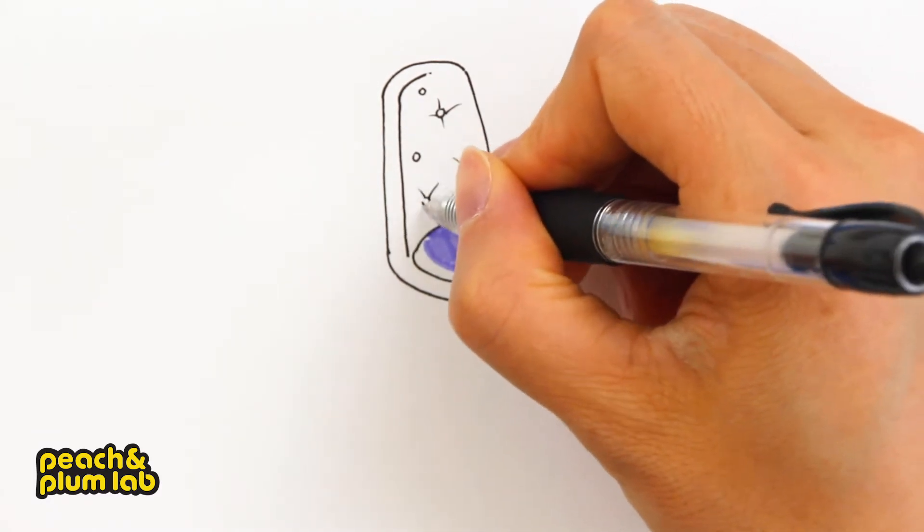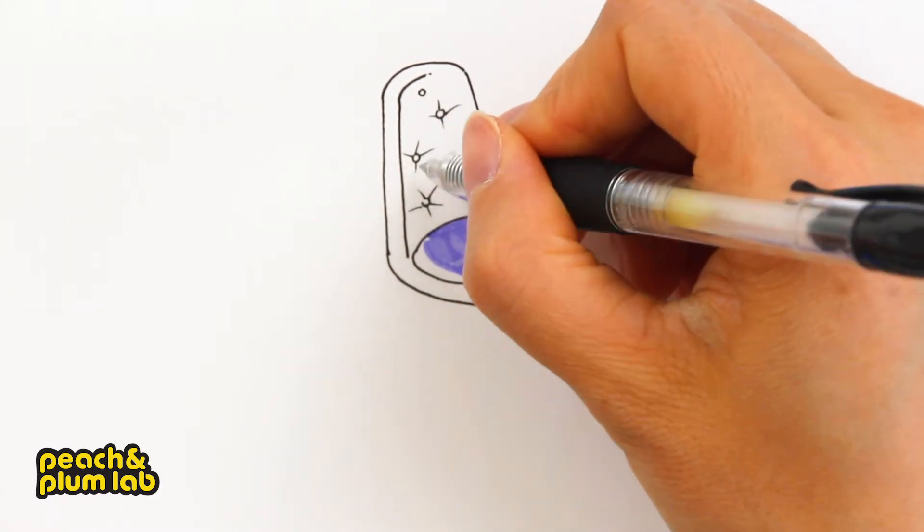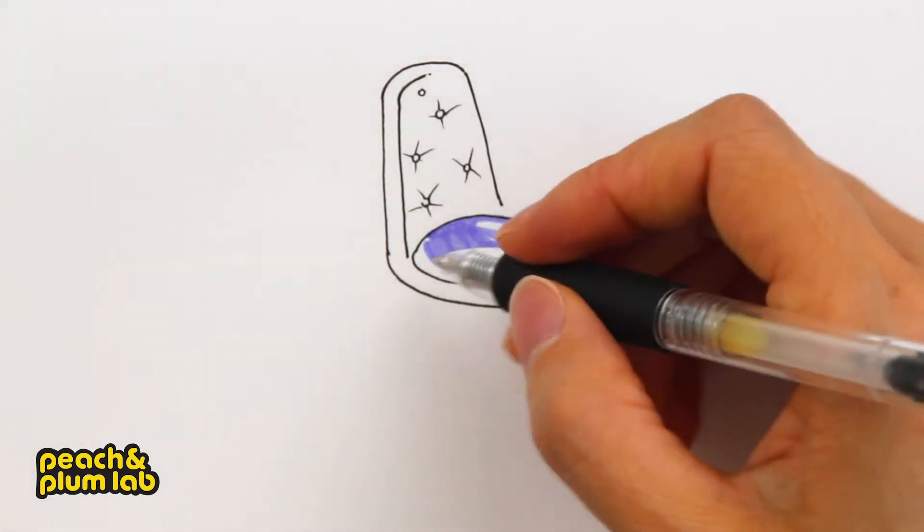And then just add three or four lines expanding out from the circle. So now we finish the seat and the back. We're going to draw the legs.